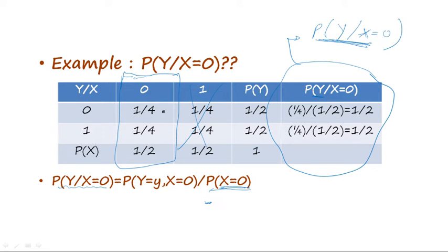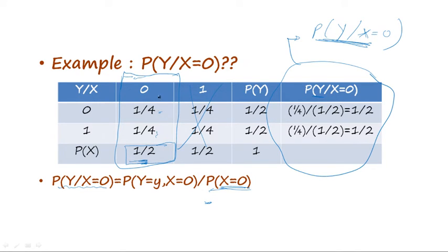So we divide the joint probabilities by the total probability of x being 0. The first conditional probability is 1/4 ÷ 1/2 = 1/2, and the second is also 1/4 ÷ 1/2 = 1/2. The key concept here is that we divide each joint probability by the total probability on which we are conditioning.